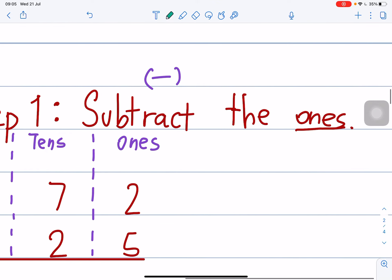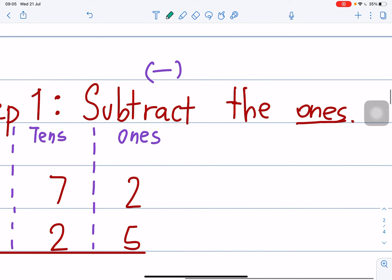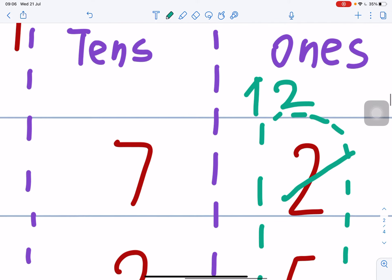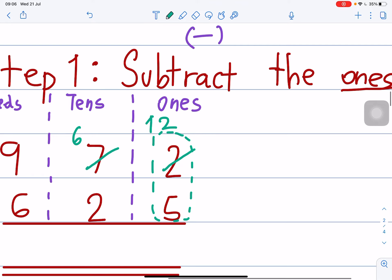So, let's do step 1. Step 1. Subtract the ones. Minus 1. So, let's do this. Here. Step 1. 2 minus 5. 2 minus 5. Cannot. So, what you do is, you cut 2 and put number 12. 12. And then, in the tens, here, tens here, you cut 7 and minus 1. 7 minus 1 is 6.